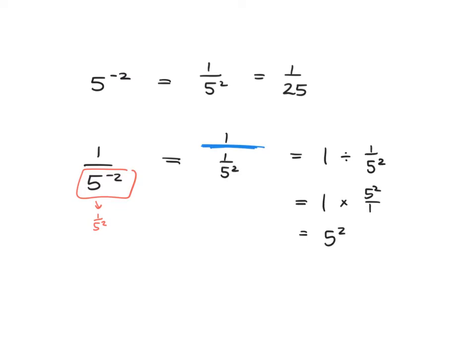All right, so that all looks very hairy — there were a whole lot of things to remember. You first had to remember that 5 to the negative 2 is just 1 over 5 squared, then remember that the fraction line means division, and then remember how to do division of fractions. But the joy of this is you can see something: if you had 5 to the negative 2 it just means 1 over 5 squared — the negative sends it to the bottom. And here, where the negative exponent was at the bottom, it actually just sent it to the top and became 5 squared, which is 25.